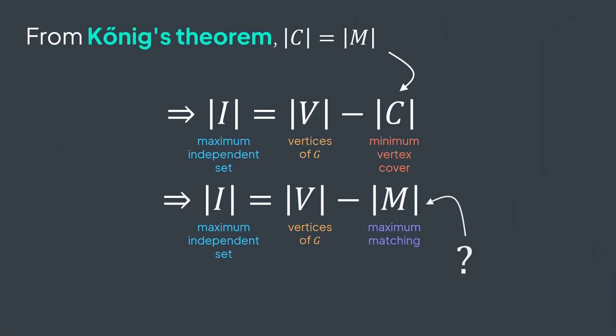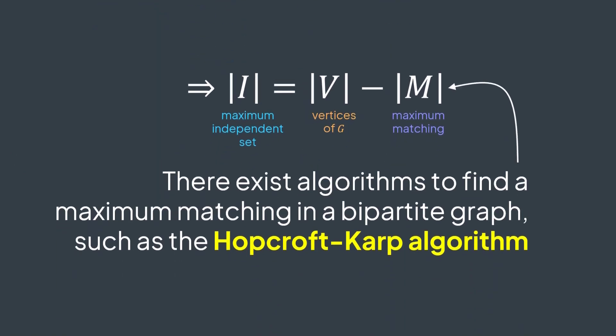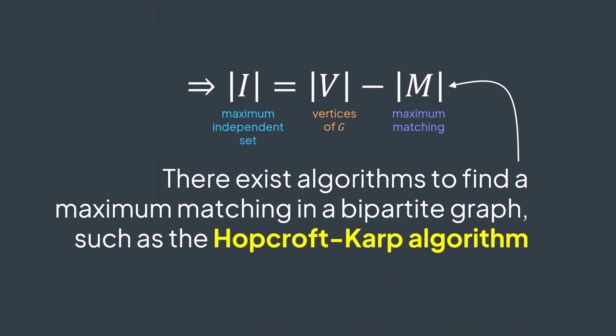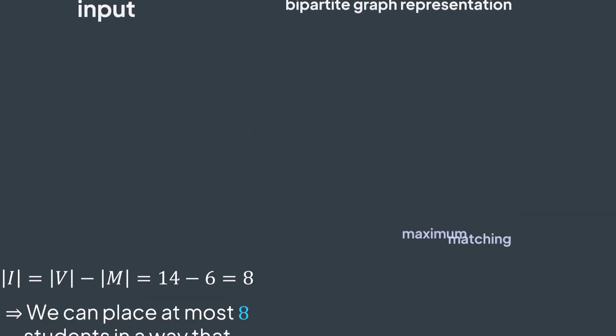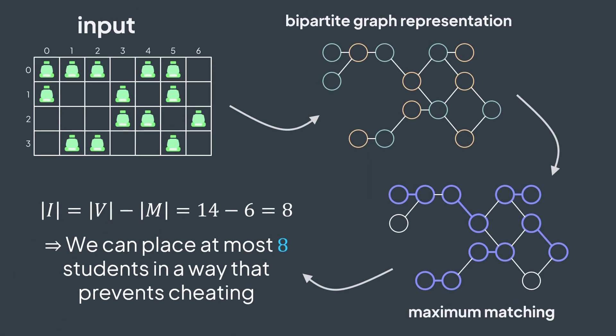How to find the maximum matching in a bipartite graph? Easy — we have algorithms for that, such as the Hopcroft-Karp algorithm. We apply it on our bipartite graph, we get the size of the maximum matching, and then we can compute the size of the maximum independent set of our graph, which represents the maximum number of students that can pass the exam in the classroom without being able to cheat. In this example, we get a maximum matching of size 6, and we have 14 vertices. So the size of the maximum independent set is 14 minus 6, which equals 8 — we can place at most 8 students.